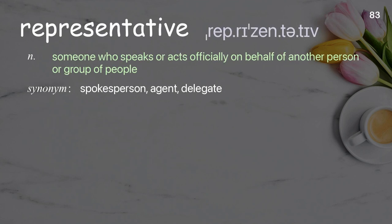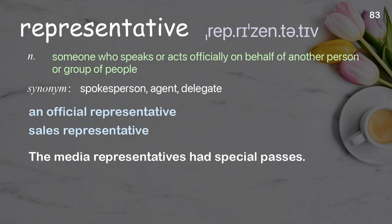Representative: Someone who speaks or acts officially on behalf of another person or group of people. Examples: An official representative. Sales representative. The media representatives had special passes.